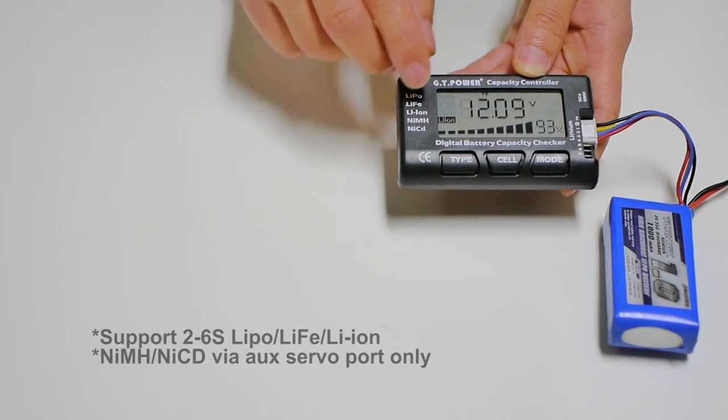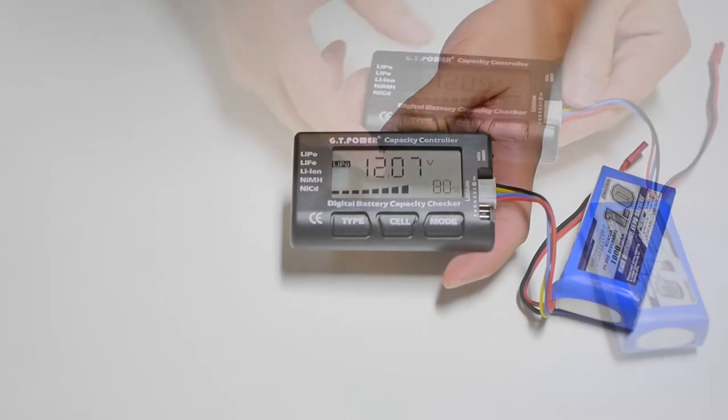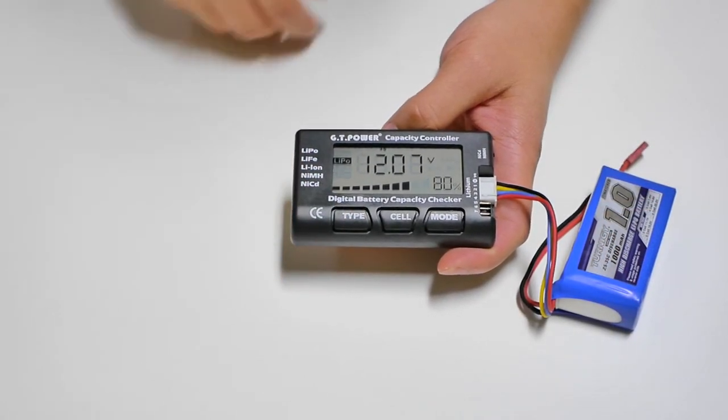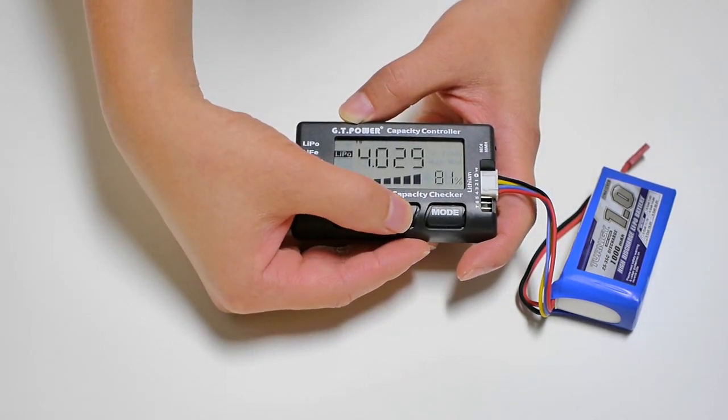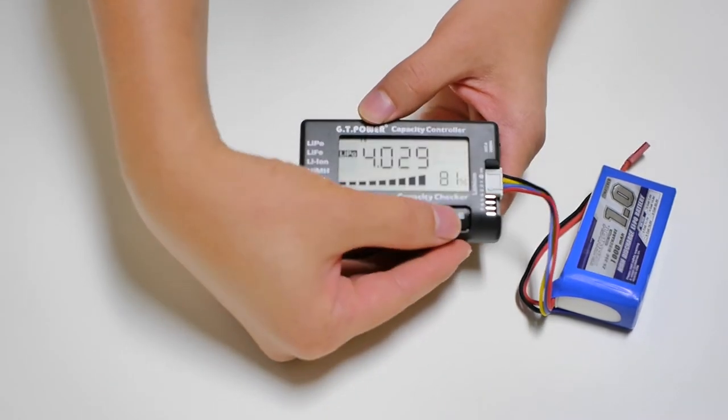You can also check your NIMH and NICD by using this auxiliary port. To check your lipo pack, first make sure you are in lipo mode. Press the cell button to cycle through the voltage of each cell. Pressing the mode button will give you more details of your pack.